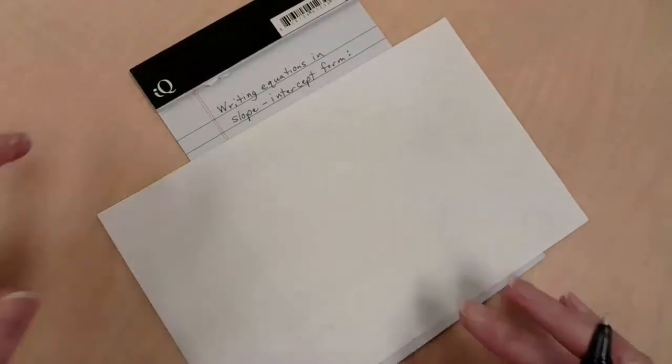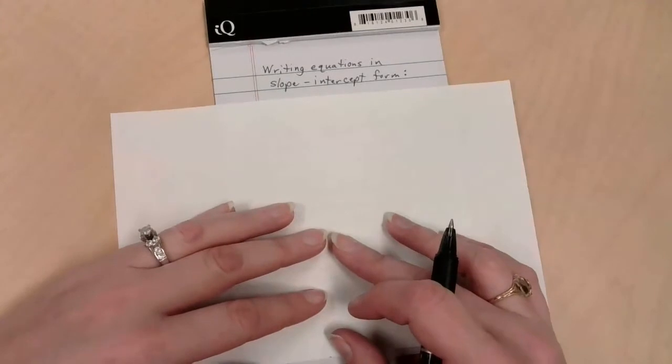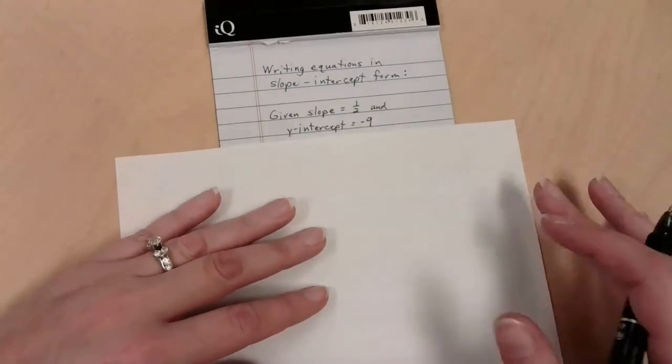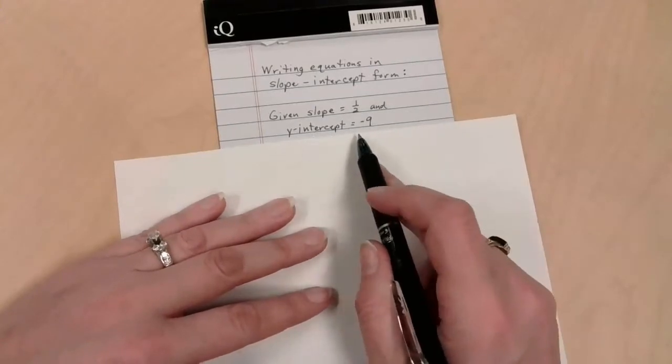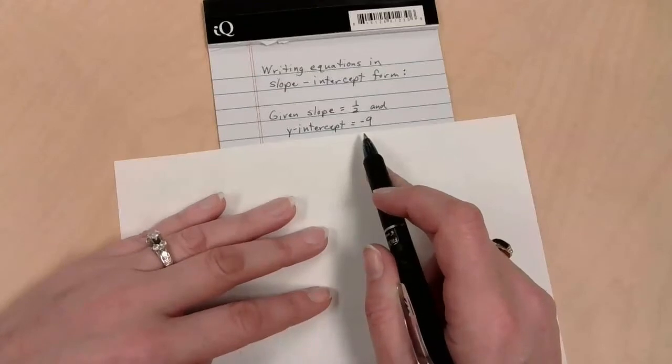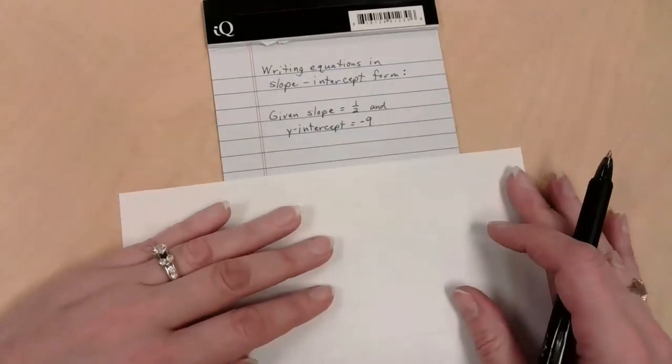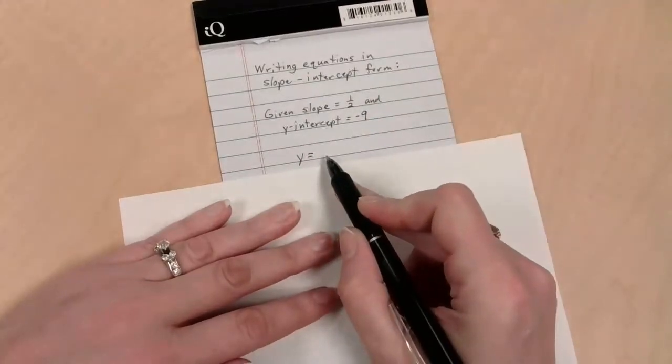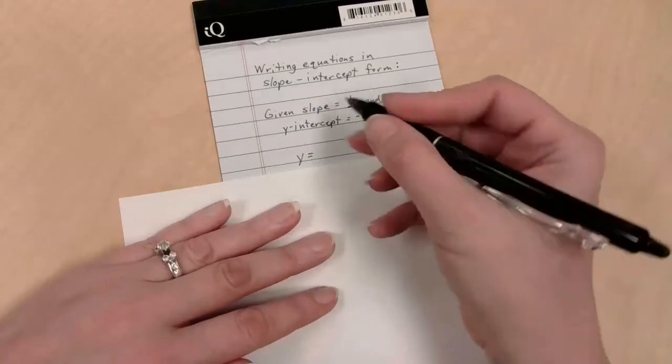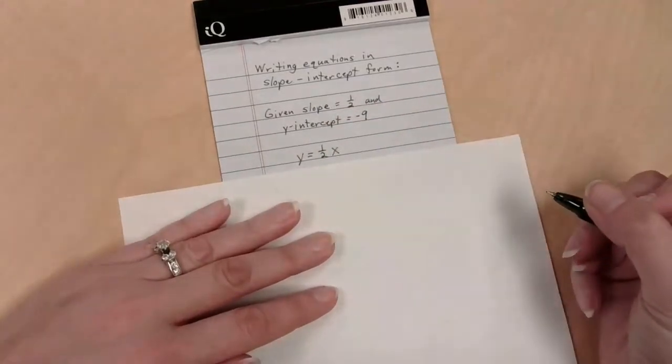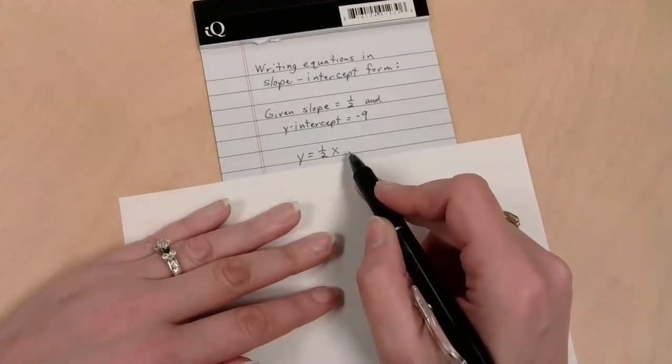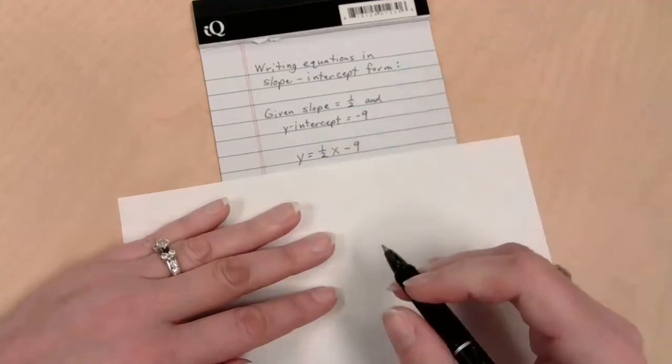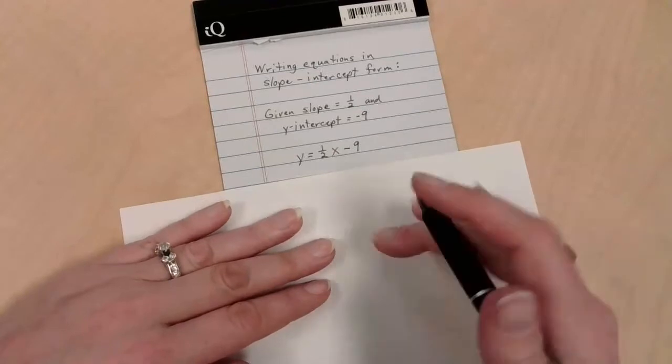We've got two examples of this, but this is also a nice form for writing equations. So we talked about it's a good form for graphing. It's also a good form to write the equations if I start with some data. Let's say I'm given the information that I know a line has a slope of 1 half, and I know that the line crosses the y-axis at negative 9. Can I write the equation for this? Absolutely. I can make this happen.